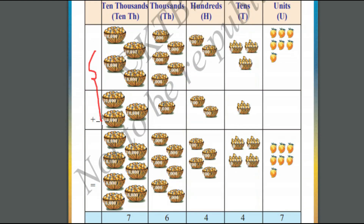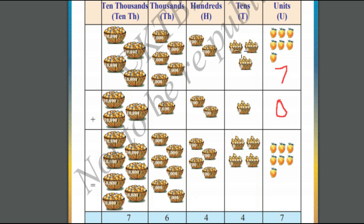Now let us add these two numbers. In the units place, we have got 7 mangoes in the first number and 0 mangoes in the second number. So 7 plus 0 is equal to 7. In the tens place, the first number has 30 mangoes and the second number has 10 mangoes, so totally 40. In the tens place, we have got 4 — we can represent this as 40.